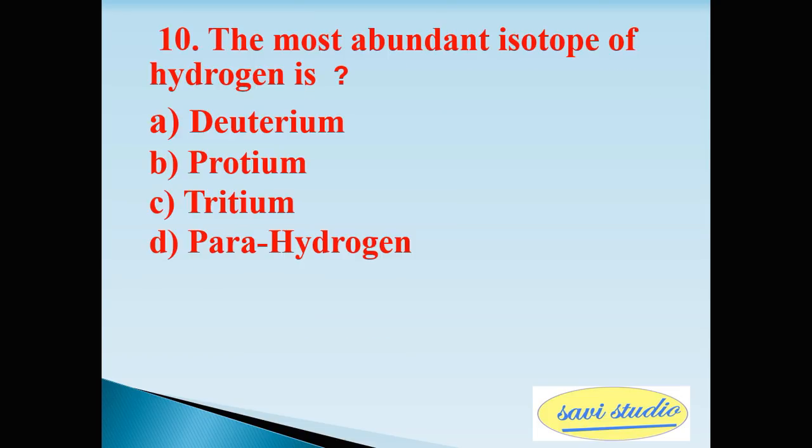Tenth question: the most abundant isotope of hydrogen is A: deuterium, B: protium, C: tritium, D: parahydrogen. The right answer is B: protium.